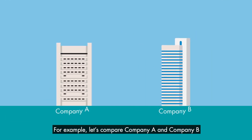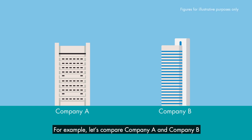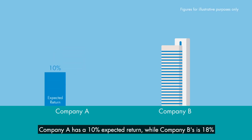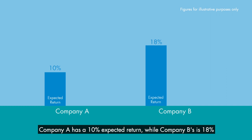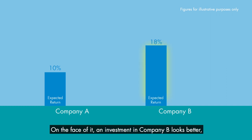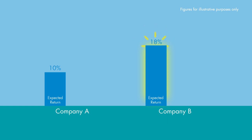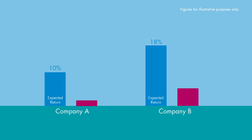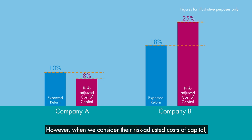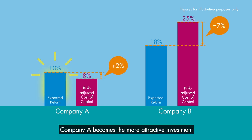For example, let's compare Company A and Company B. Company A has a 10% expected return, while Company B's is 18%. On the face of it, an investment in Company B looks better because of its higher expected return. However, when we consider their risk-adjusted costs of capital, Company A becomes the more attractive investment.